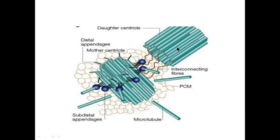In the centrosome there are two cylindrical structures called centrioles, and there is an amorphous area surrounding them known as the pericentriolar material. One is a mother centriole and one is a daughter centriole; these two are linked together by interconnecting fibers. From the amorphous area there are radiating microtubular structures that have polarity — positive polarity indicates addition of tubulin proteins, and the negative end is where disintegration of tubulin protein takes place.